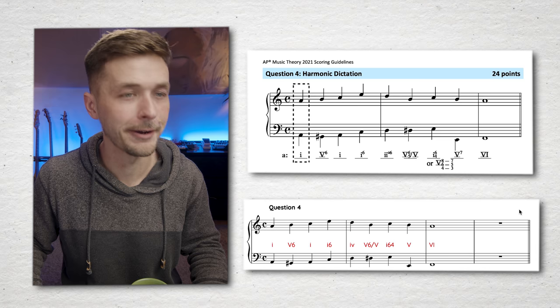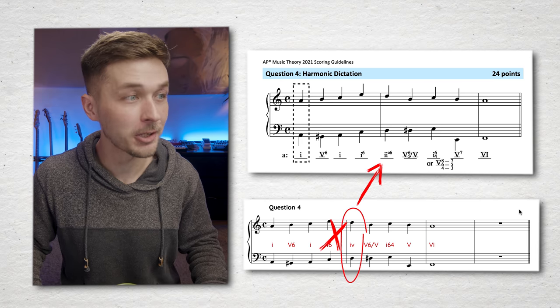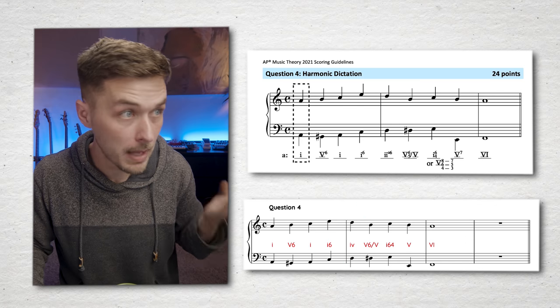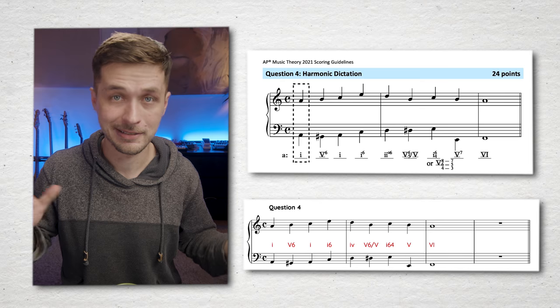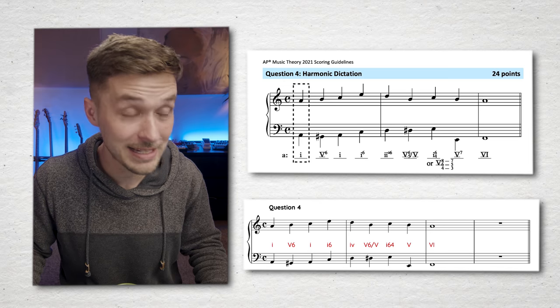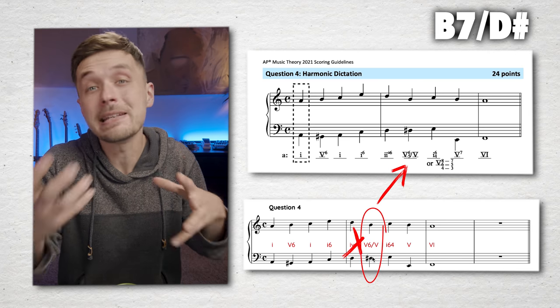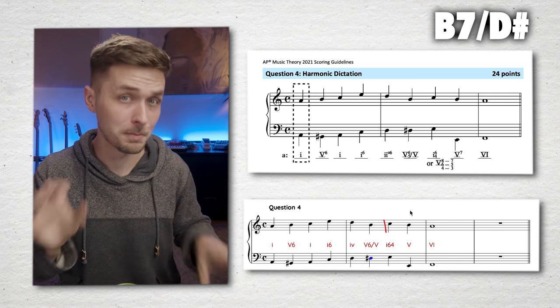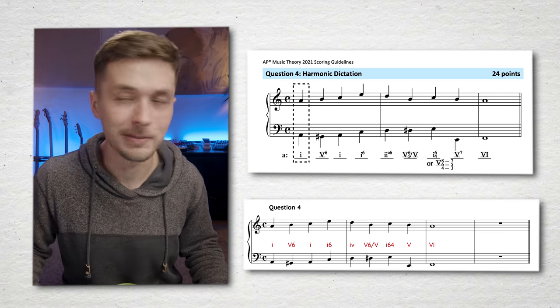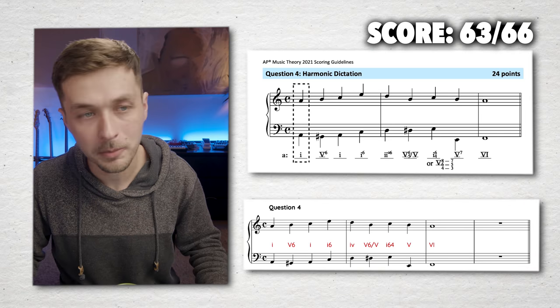Ah, no. Oh, oh, I lost two points there. That wasn't a four minor. That was a two diminished six, which has the same bass note and same melody note. But, I just, I misheard that. And also that was a five, six, five of five, which means that it's a dominant seventh chord. So that's a B seven over D sharp instead of just a B regular triad over a D sharp. Well, I got two points off on that one. Damn. So we've got 22 points instead of the full 24, but the rest of it looked pretty good.